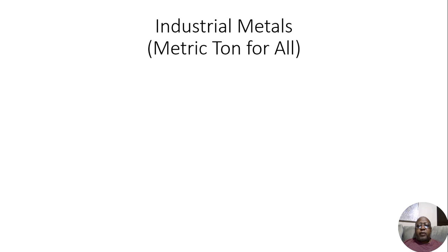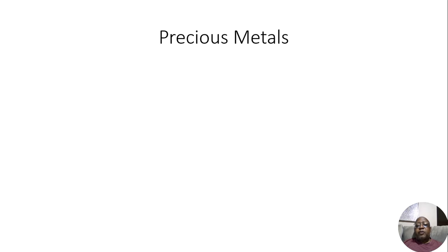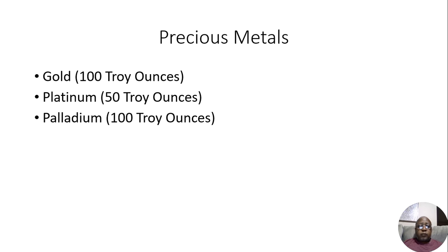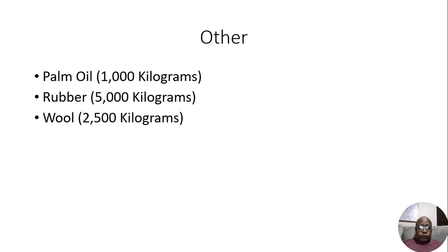We have industrial metals, and they're all the same weight — metric ton for all. There's tin, LME nickel, aluminum, cobalt, aluminum alloy, and molybdenum. Then we have precious metals: gold, platinum, palladium, and silver. And lastly, the other category: palm oil, rubber, wool, and amber.